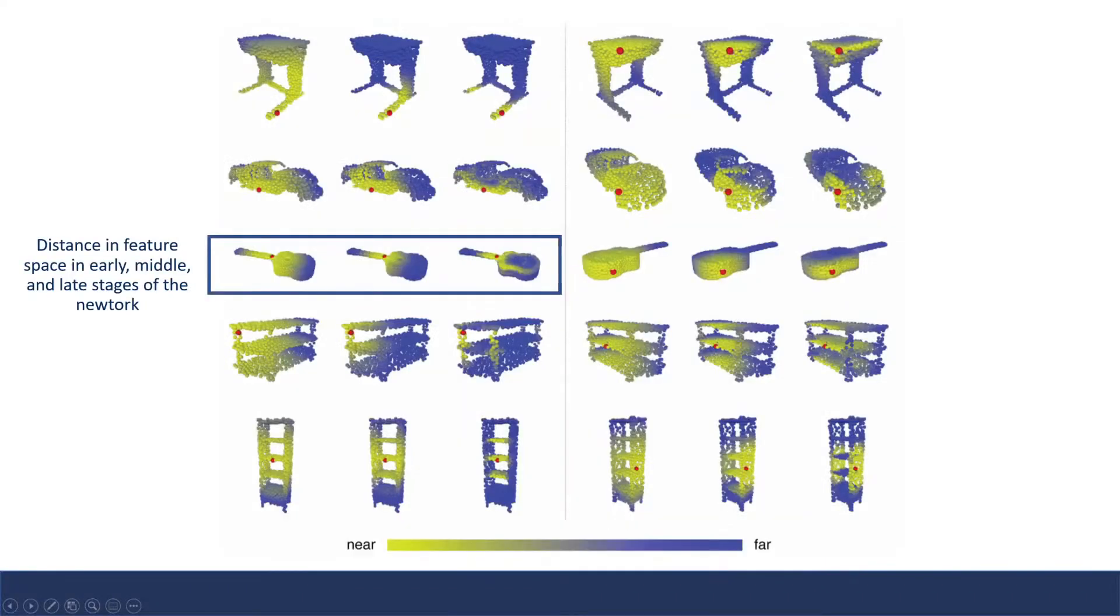Some interesting results: distances in feature space actually show that as you get further into the network—you'll notice the three columns are later stages of the network—semantically similar things get closer and closer in feature space.